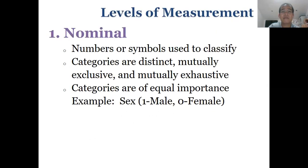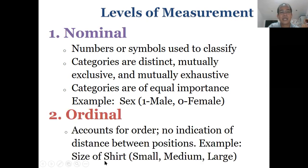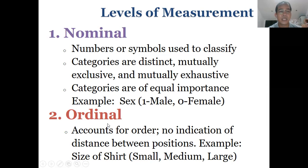Data can be classified into levels of measurement. The lowest level is nominal — numbers or symbols are only used to classify; categories are distinct and mutually exclusive. Example: sex — male or female. Next is ordinal, which accounts for order but has no indication of distance between positions. Example: small, medium, large — the data are ranked. Not all nominal data can be considered ordinal, but all ordinal data can also be considered nominal. Ordinal is higher than nominal because it already accounts for order.